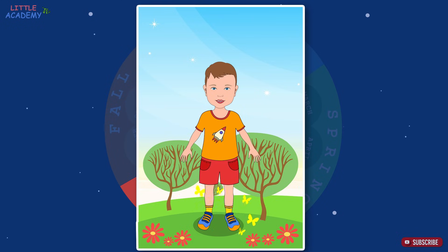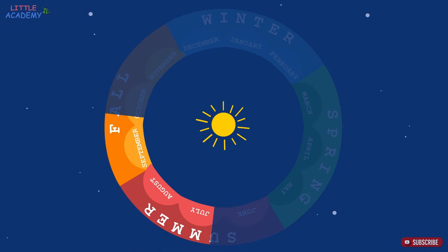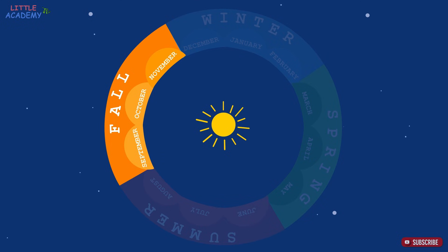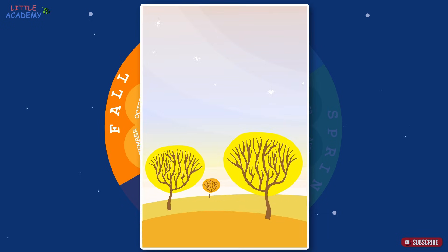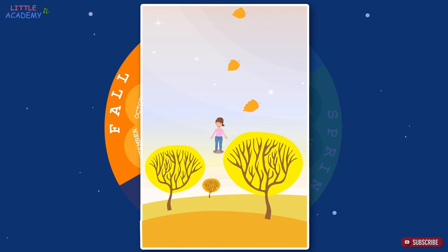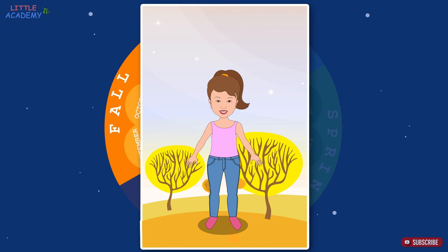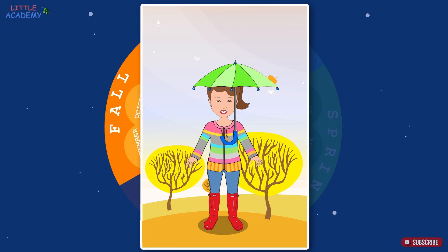After summer comes fall. The fall months are September, October, and November. It starts getting colder in the fall. The leaves turn yellow and fall off, the flowers fade, the sky gets cloudy, and it often rains. In the fall we need to dress warmer, so we put on a sweater, rubber boots, and bring an umbrella when it rains.